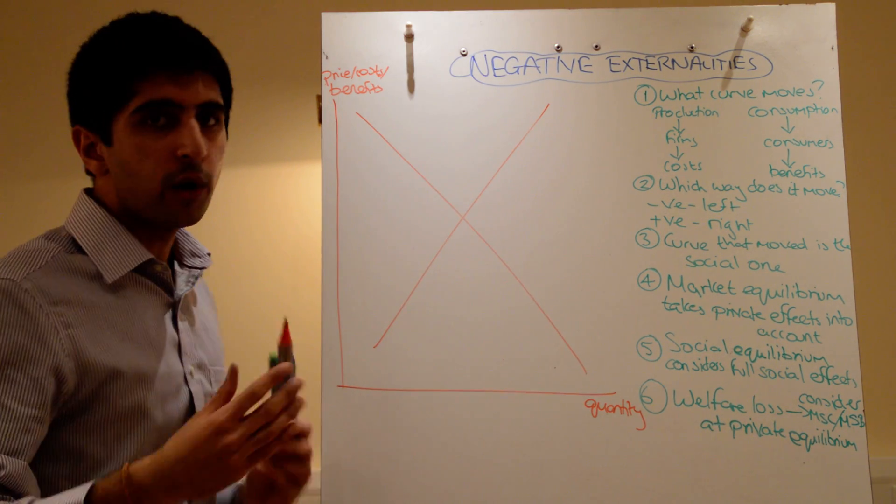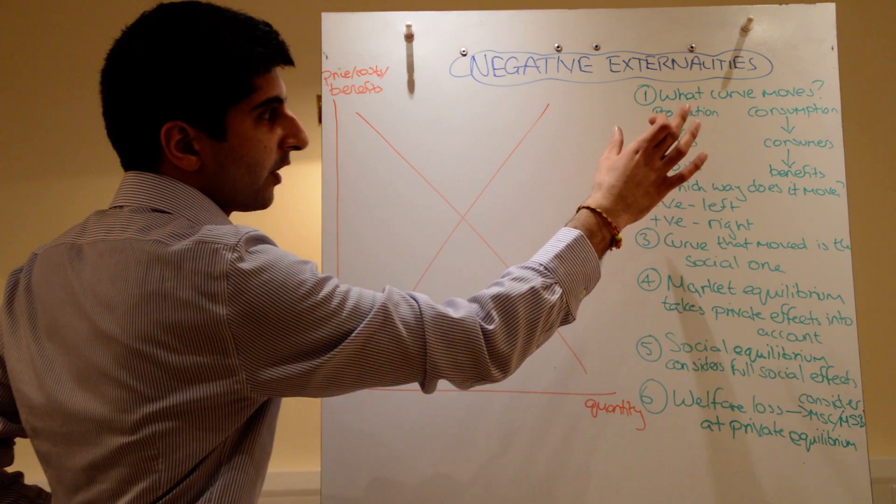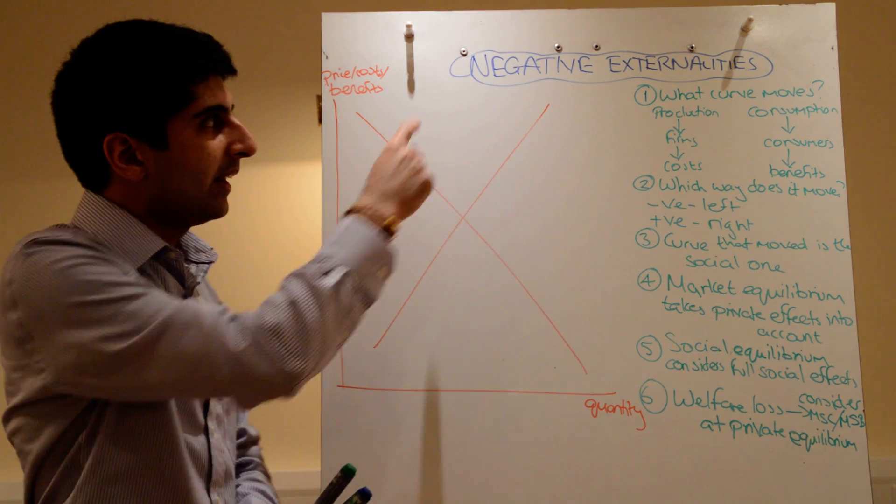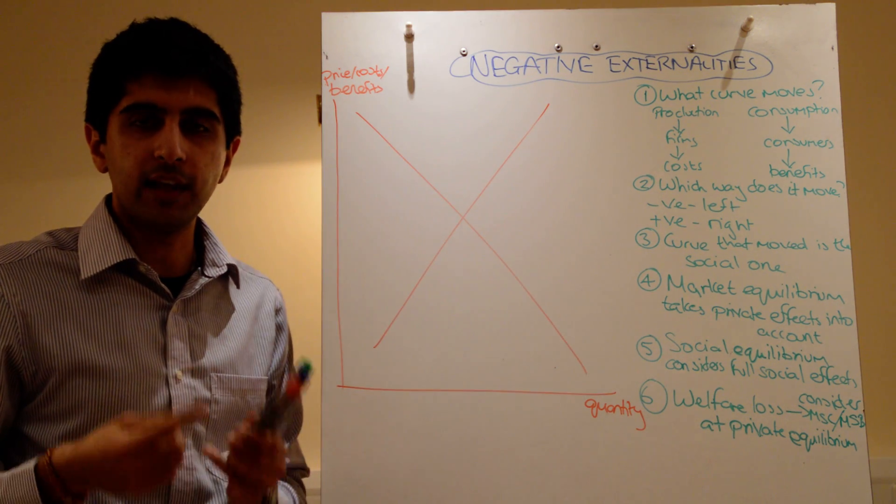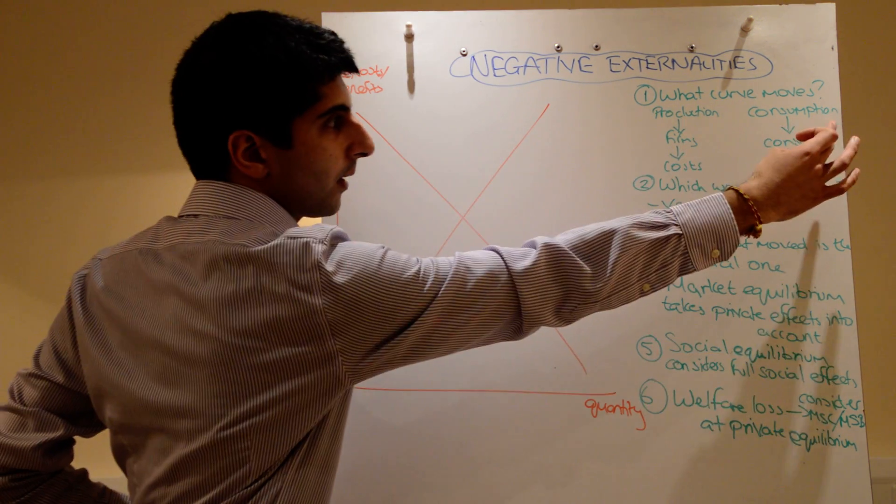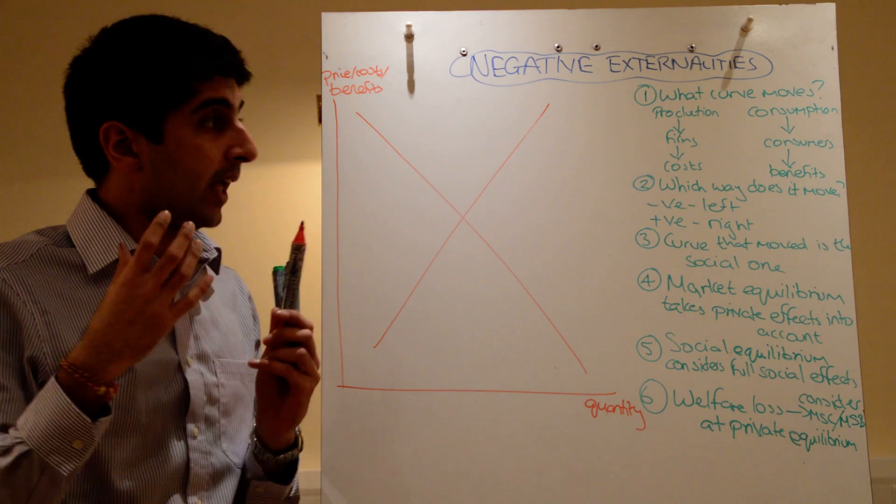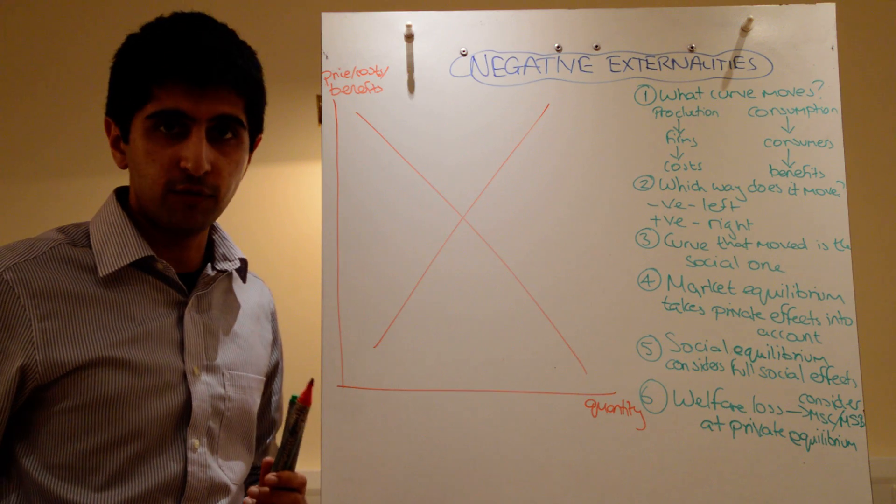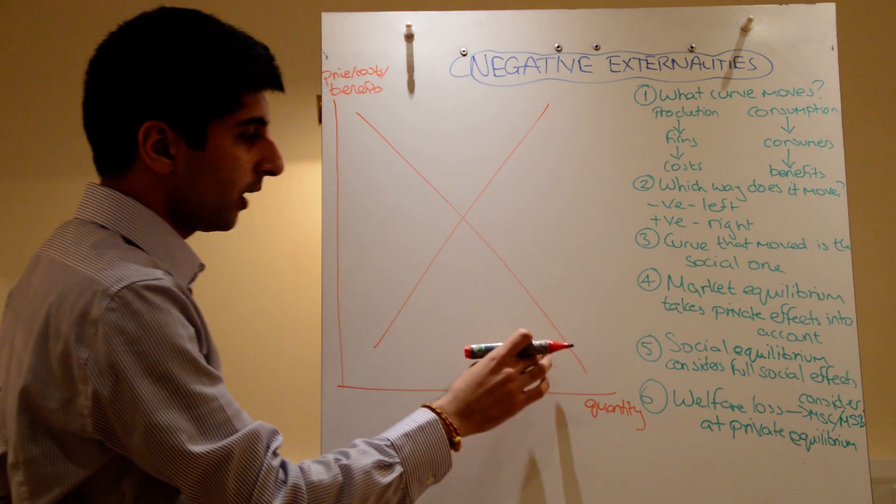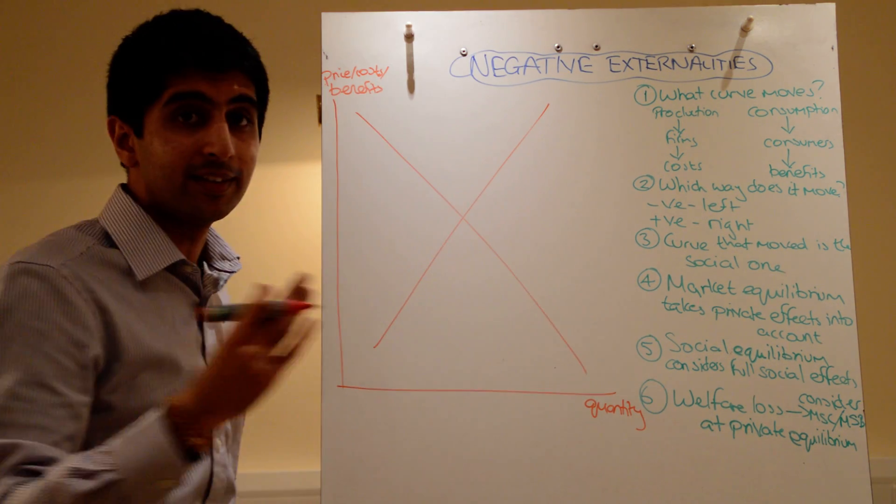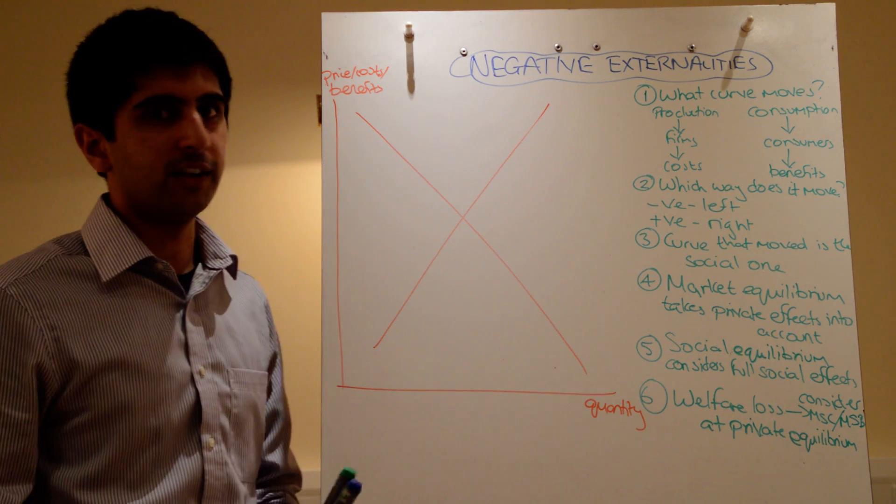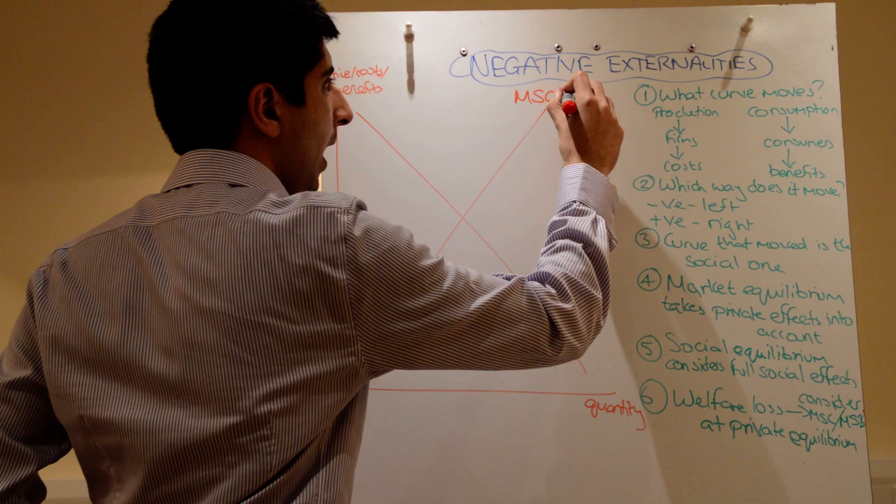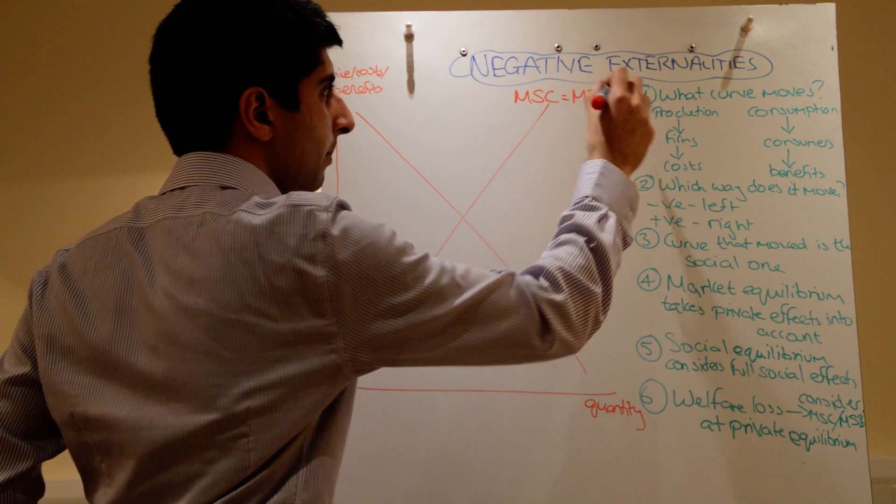First we need to do is work out which curve is going to move, either the cost curve or the benefits curve. We're going to first look at a negative externality in consumption. We're looking in consumption, therefore the externalities are generated by consumers, and which curve relates to consumers, the benefits curve relates to consumers. So that curve is going to move. The benefits curve is the downward sloping curve. The other curve we're not going to touch, so that we're just going to label MSC which is also MPC.